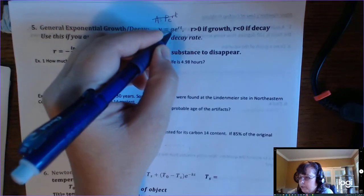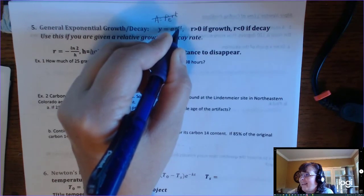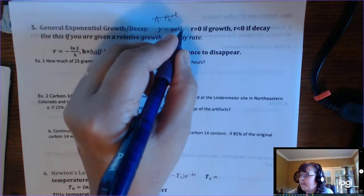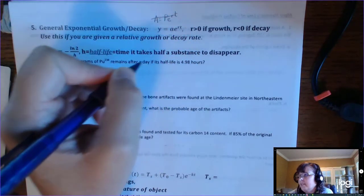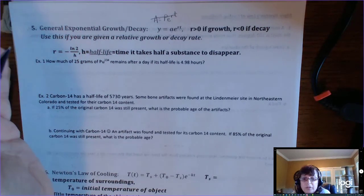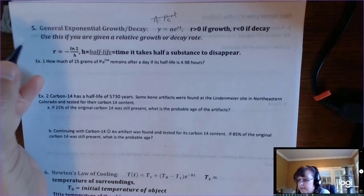So your A is your initial value, R is growth if it's greater than zero, and R is decay if it's less than zero, so there may be a negative in this exponent. T is time. Now we're back to the general form, so time could be in hours, days, minutes, it depends what the problem says.